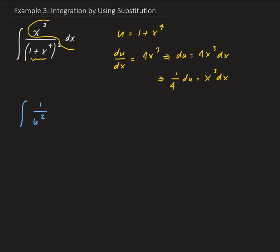So this part here is going to become 1 fourth du. So 1 fourth is a constant, so we have 1 fourth times the integral of 1 over u squared du.